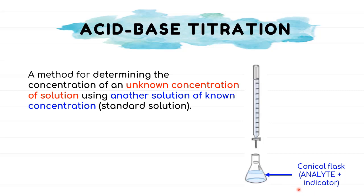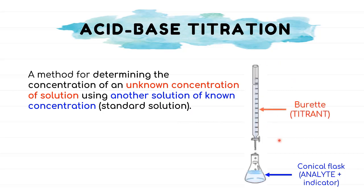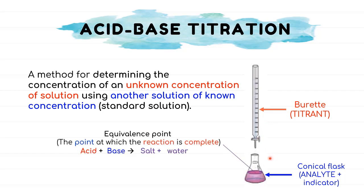Usually for titrations, we'll use phenolphthalein. The analyte will be neutralized by an acid or base of known concentration, called the standard solution, which is located in the burette and known as the titrant. A solution is added gradually to the unknown concentration until the chemical reaction between the two solutions is complete. The point at which the reaction is complete — where all the acid and base have reacted to form salt and water — is known as the equivalence point.